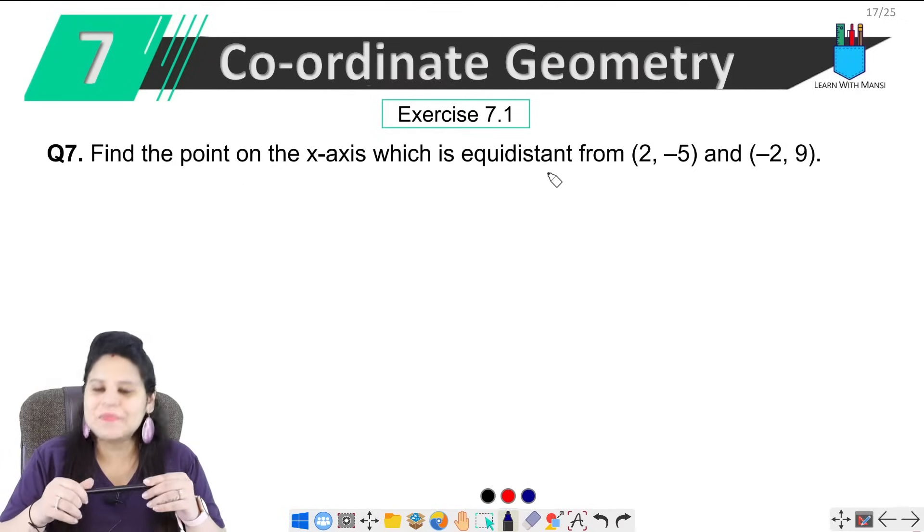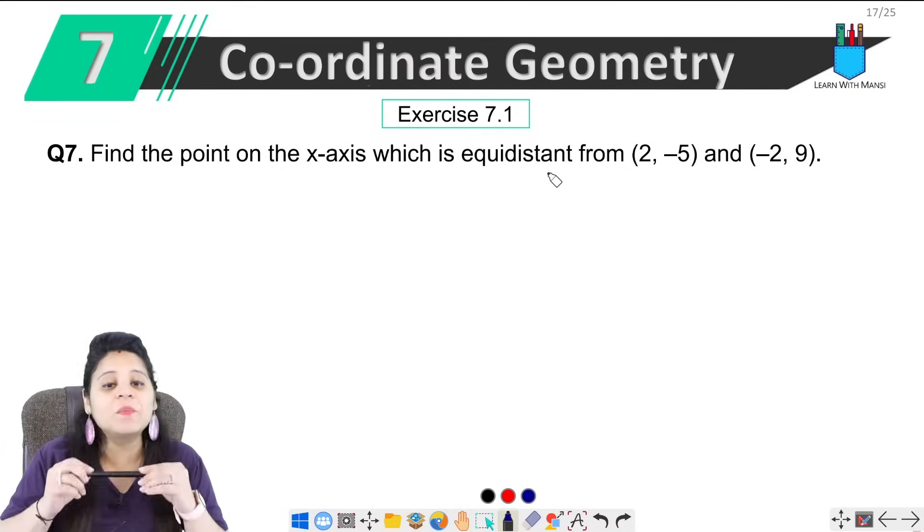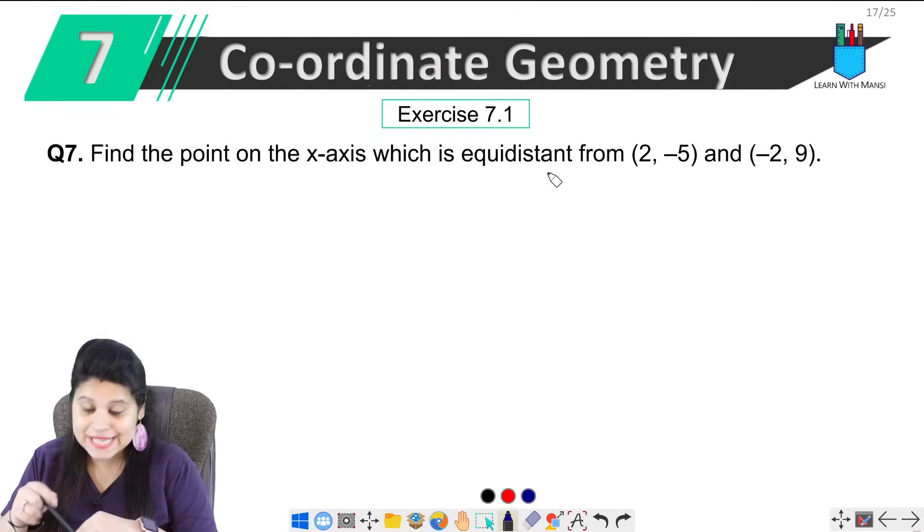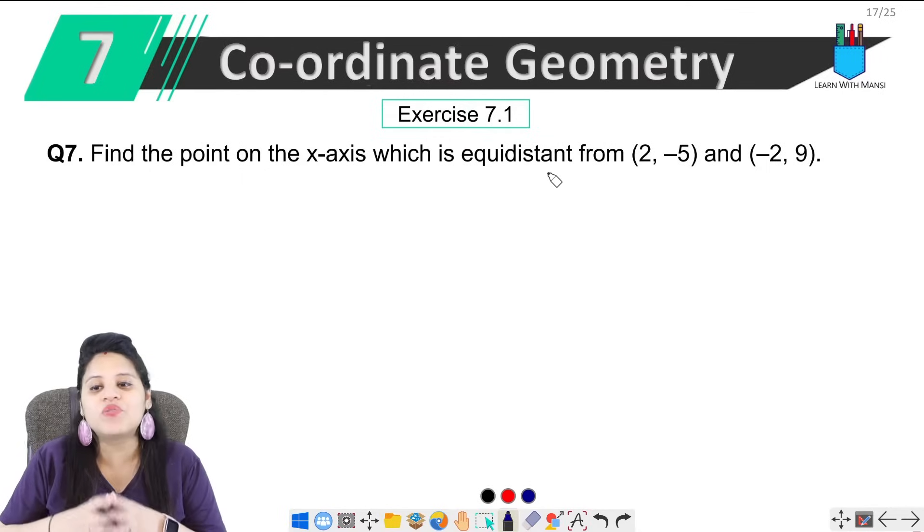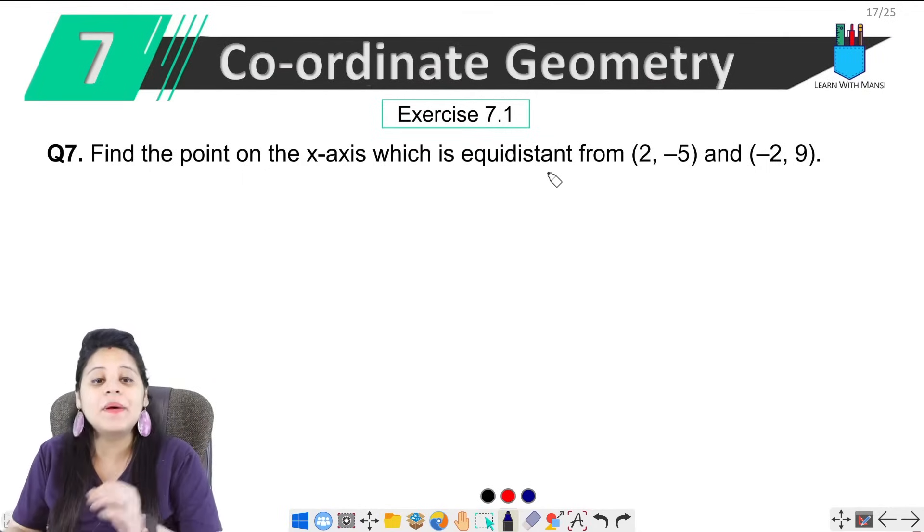Hello everyone, this is Vansi, welcome back to the channel. Now we are on the 7th question. Question says find the point on the x-axis which is equidistant from (2, -5) and (-2, 9).